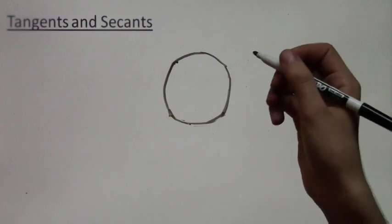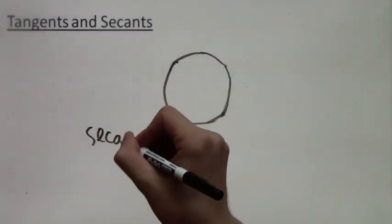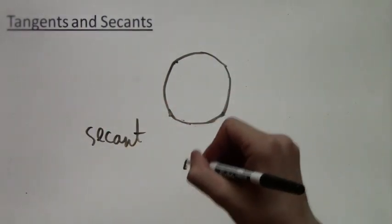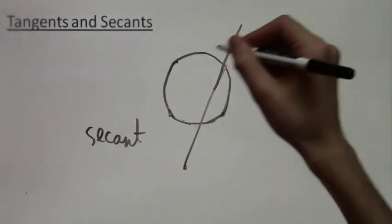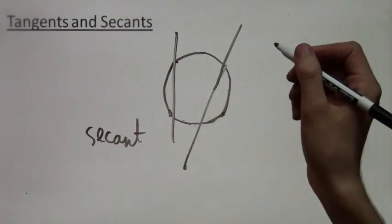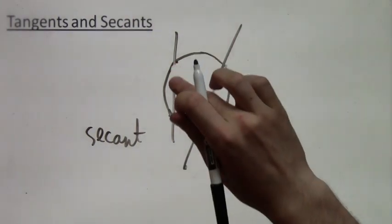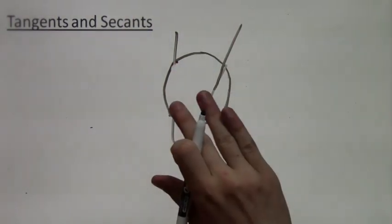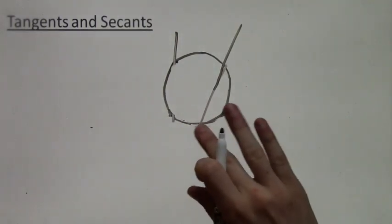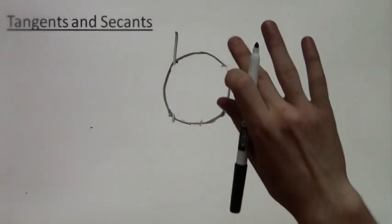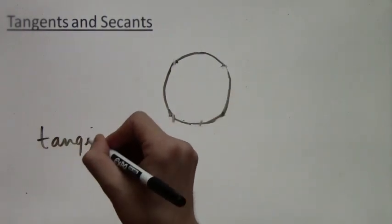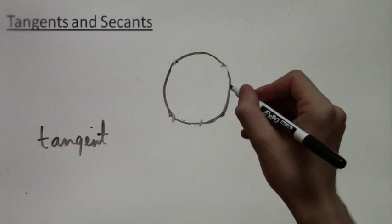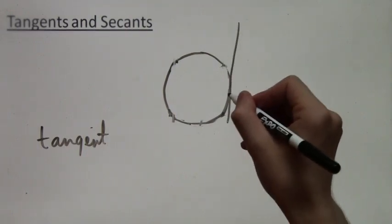So here we have a circle, and I'll remind you that a secant intersects a circle twice. And here's another secant. But there are also tangents, and the tangent to a circle is a line that intersects the circle exactly once. So it just skims by, touching it once. This is a tangent.